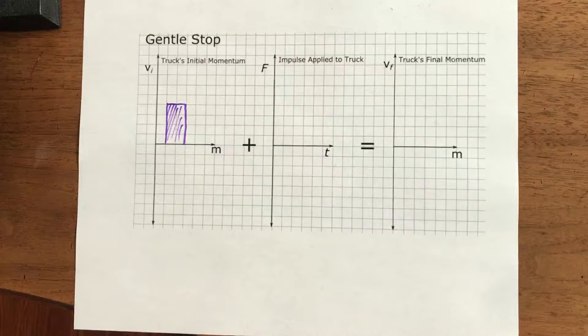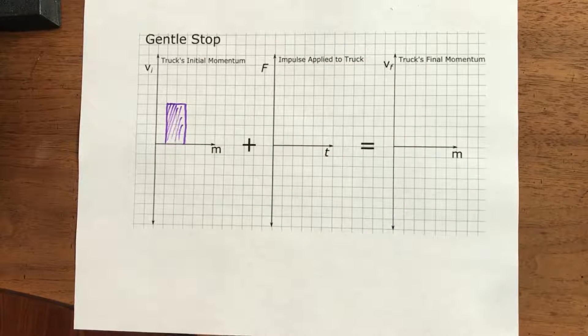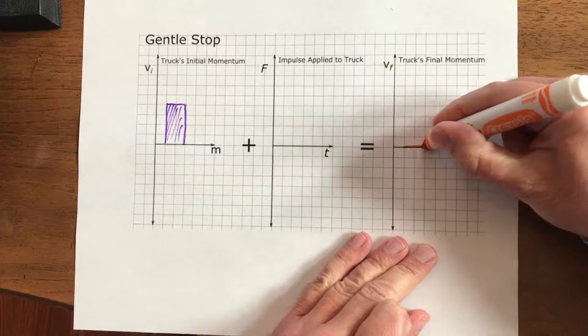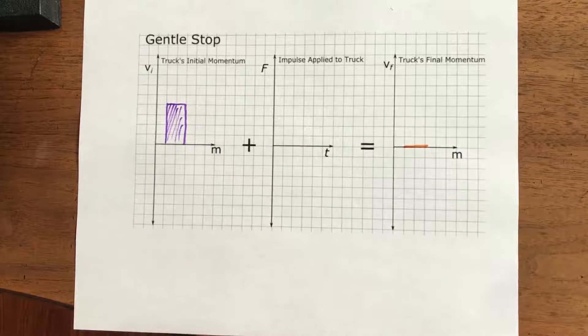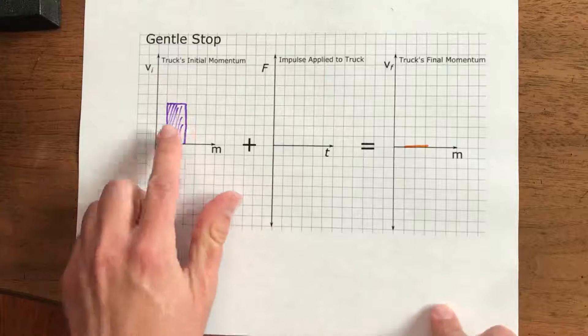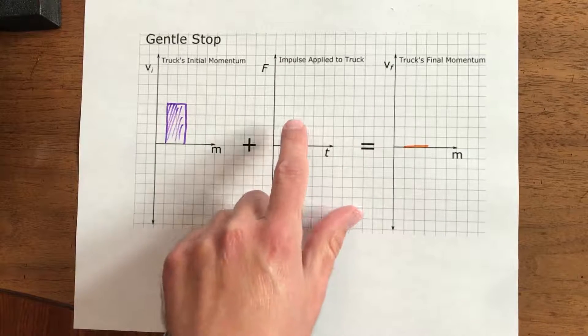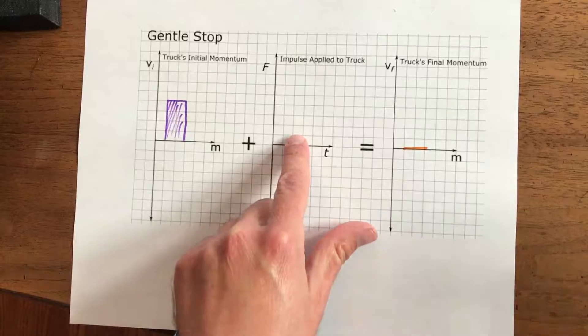Now we know what the final momentum is in this case because the truck comes to a rest, so there's zero momentum. We got to get rid of all that momentum, we have to change it by a certain amount. How much? Eight squares worth of momentum we got to change. That means we need eight squares worth of impulse to take it away.